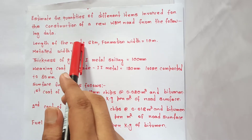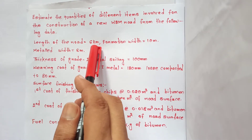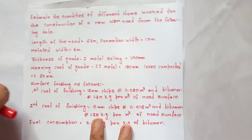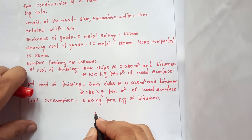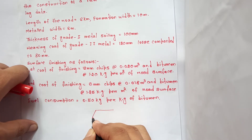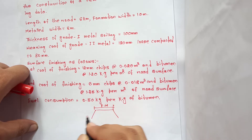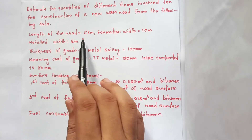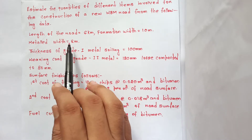The length of the road is 6 km. The formation width of the new WBM road is 10 meters.